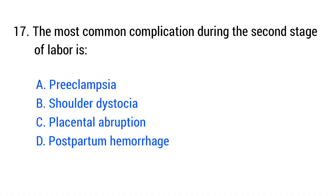Question number seventeen. The most common complication during the second stage of labor is? The right answer is option B: Shoulder dystocia.